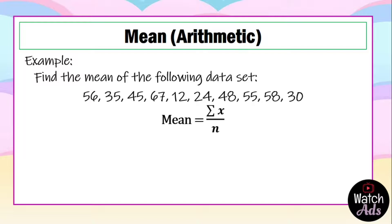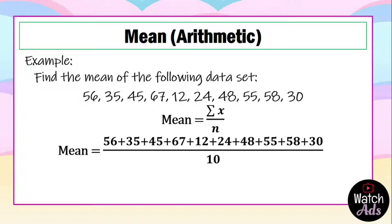Solve for the mean, that is the summation of x all over n. In layman's term, we just add all the numbers in the data set and then count the numbers in the data set, and the number of numbers in the data set is n. First we add 56 + 35 + 45 + 67 + 12 + 24 + 48 + 55 + 58 + 30, all over 10, because if you count how many numbers are there in the set, there are 10 numbers. This is just finding the average. So the answer is 430 over 10, and our mean is 43. That is our final answer.